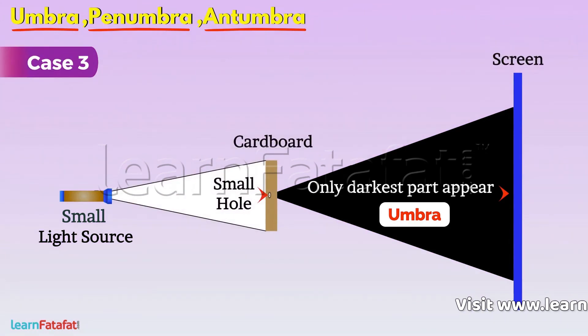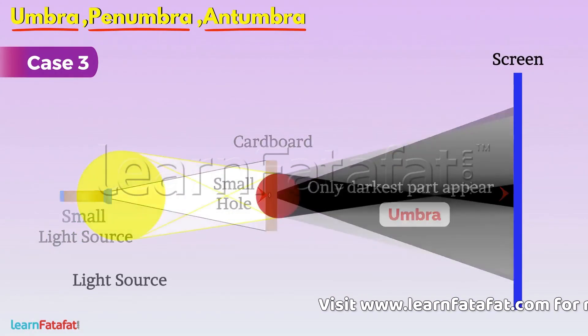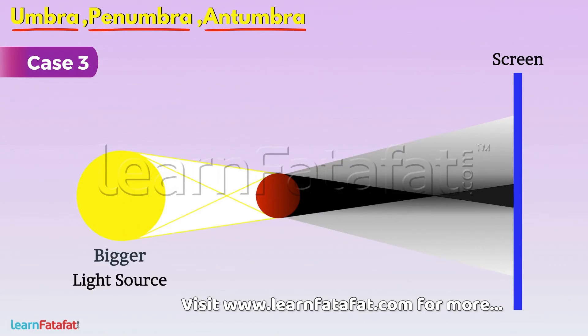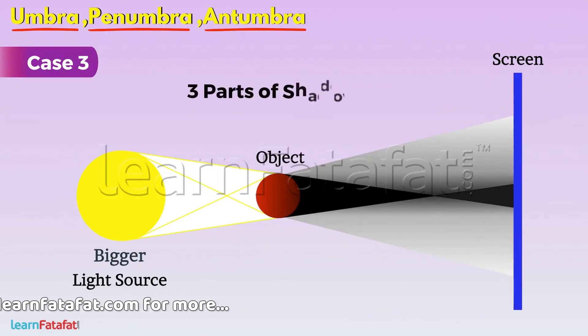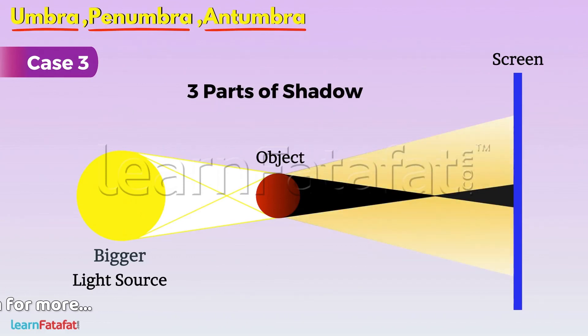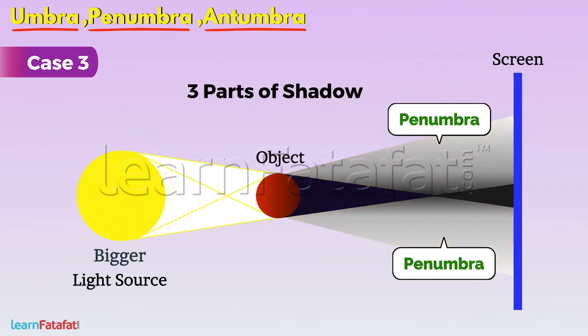Case 3. This time, we replace source with a bigger source than object size. Now, there are three parts of shadow. The lighter part that is Penumbra, the darkest part that is Umbra. Along with these two, there exists a third part which is formed at some distance from the object. It is called Antumbra.